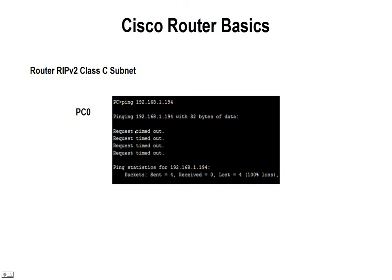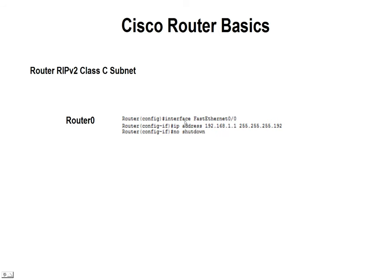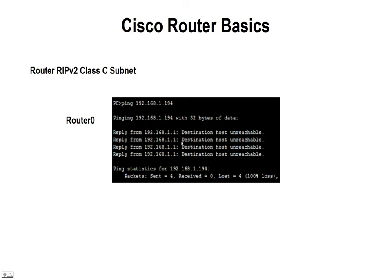If we go ahead and from PC0 try to ping our last PC, which is going to be at the 192 address — the IP address for that is 192.168.1.194 — and we try to ping it without setting up the routers, we're going to get a request timed out with four losses. So we're going to come up to our first router and configure the fast Ethernet port, giving it 192.168.1.1 with our new subnet mask 255.255.255.192, and no shutdown to turn that port on. If we try to ping again, this time we get a destination unreachable — it gets to the default gateway port but doesn't know where to send it.